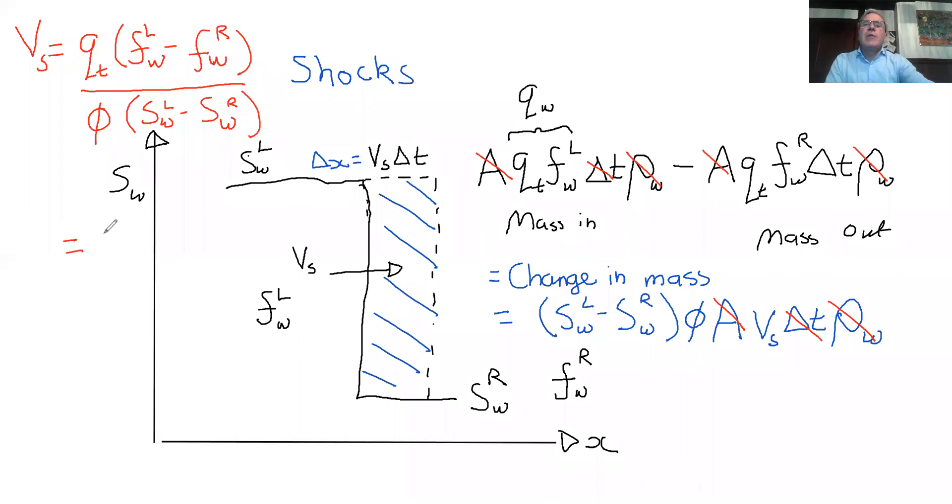And then it's going to be divided by φ and S_W left. And sometimes this can be written maybe a little bit more elegantly as Q_t over φ times ΔF_W over ΔS_W.